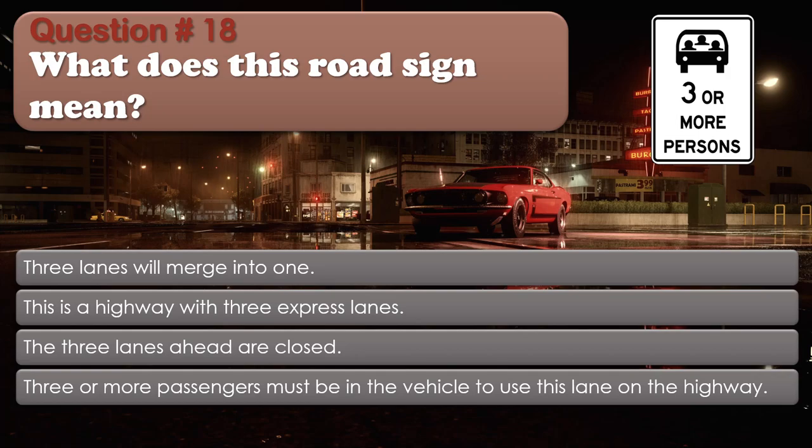Question number 18: What does this road sign mean? Options: Three lanes will merge into one. This is a highway with three express lanes. The three lanes ahead are closed. Three or more passengers must be in the vehicle to use this lane on the highway. The correct answer is Three or more passengers must be in the vehicle to use this lane on the highway.